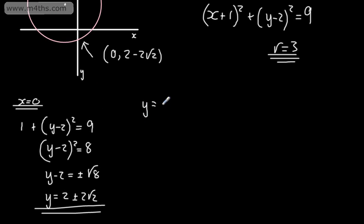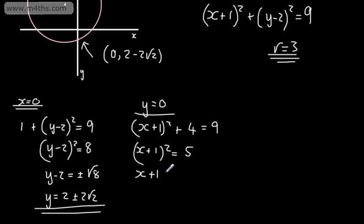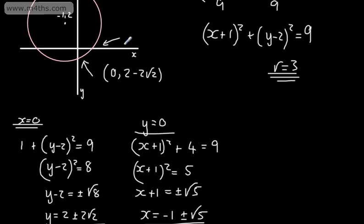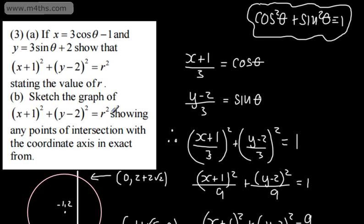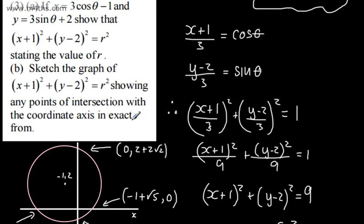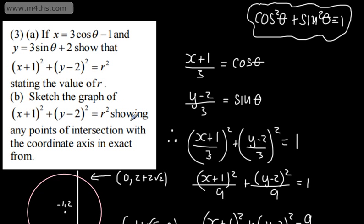For x-axis intersections, set y = 0: (x+1)² + (-2)² = 9, so (x+1)² + 4 = 9, giving (x+1)² = 5. Then x + 1 = ±√5, so x = -1 ± √5. The two x-axis points are (-1+√5, 0) and (-1-√5, 0). Don't expect every exam question to focus on one topic — it may link knowledge between topics.